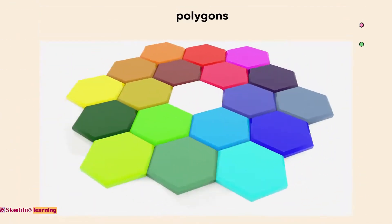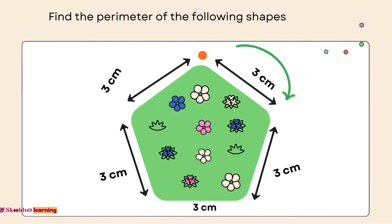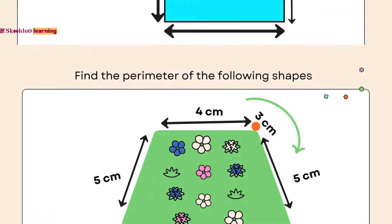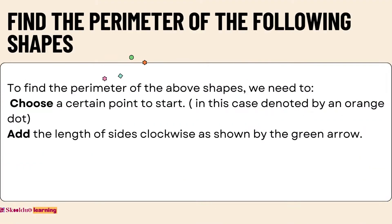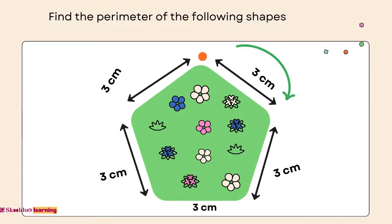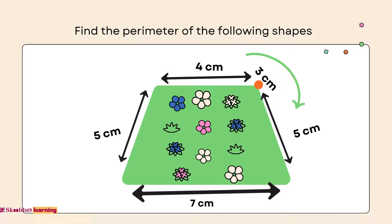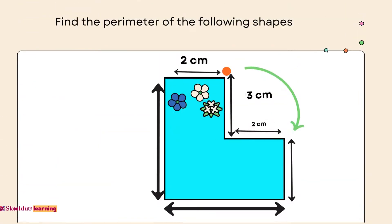Let us consider more fun shape polygons. Find the perimeter of the following shapes. To find the perimeter of the above shapes, we need to choose a certain point to start, in this case denoted by an orange dot. Add the length of sides clockwise as shown by the green arrow.